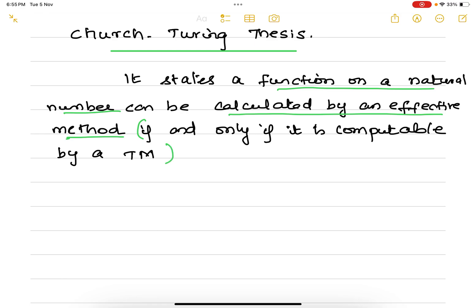It states that it is possible to perform a function on a natural number with the help of an effective algorithm if and only if that function is computable by a Turing machine.